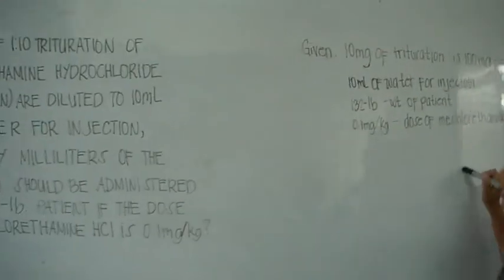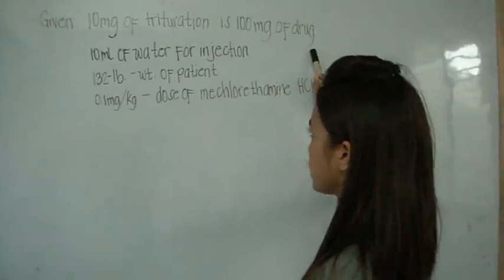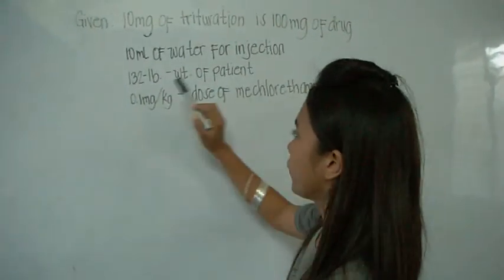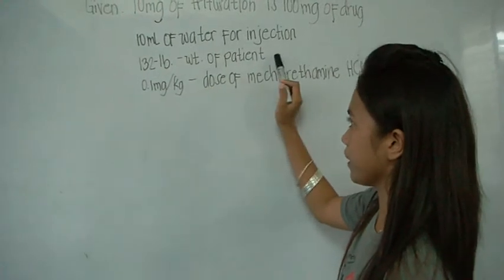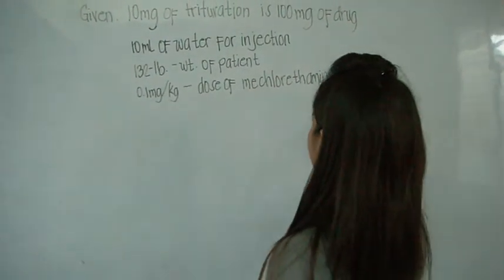Here are the given: 10 mg of 1:10 ratio of mustagen hydrochloride, 10 ml of water for injection, 132 pounds weight of the patient, and 0.1 mg per kilogram dose of mechlorethamine hydrochloride.